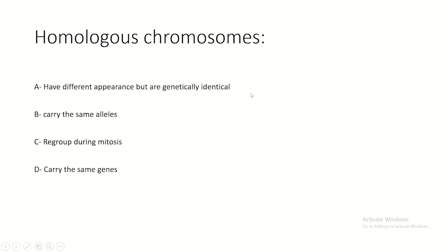Homologous chromosomes have a similar appearance but are genetically distinct. They do not necessarily carry the same alleles - only in the homozygous case for a certain gene. They carry the same genes but different alleles.